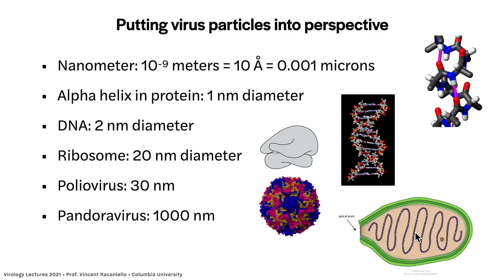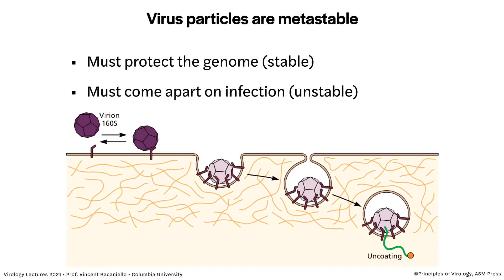Virus particles are metastable — a very important concept. They have to protect the genome as it travels from cell to cell or host to host, but in the cell they have to come apart. So they have a stable phase and an unstable phase — that's called metastability. A virus particle outside the cell is very stable, but binding a receptor can be the trigger that dissociates it and allows it to release the RNA. The trigger to go from stable to unstable varies according to virus type.